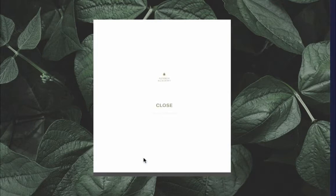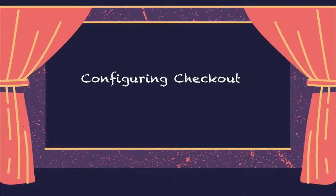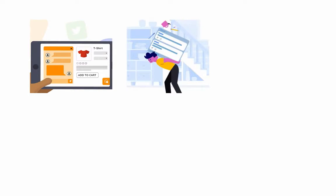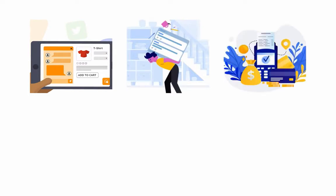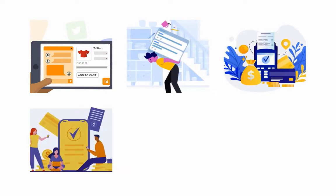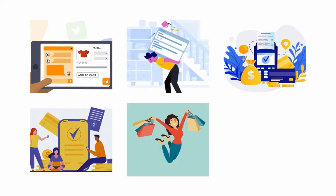Chargebee Checkout provides a smooth checkout experience for your customers while purchasing products or services from your site. Before we go ahead and learn about configuring checkout, you need to know what happens behind the curtain. The customer decides to purchase the product, Chargebee Checkout opens, the customer enters the account and payment information, the payment information is sent to the payment gateway for processing. If the payment is successful, then Chargebee creates a customer, subscription and invoice.